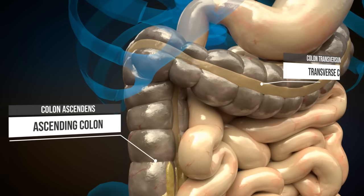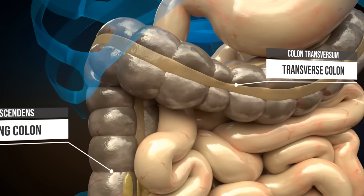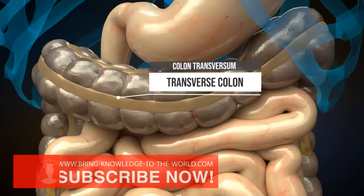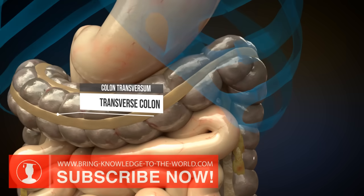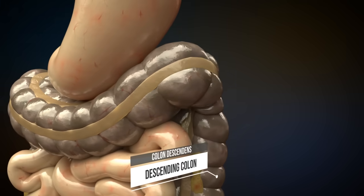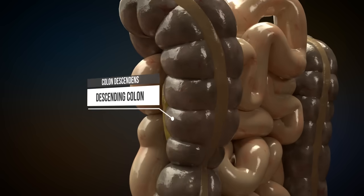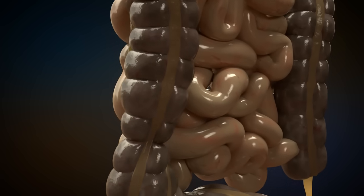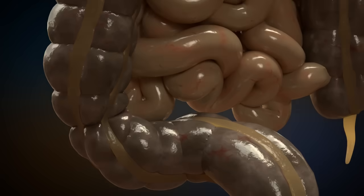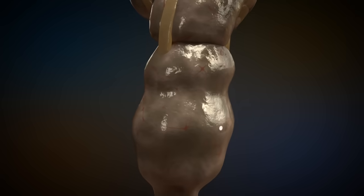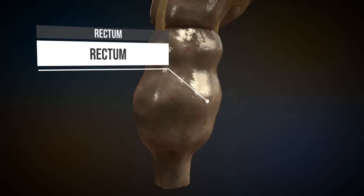Through peristalsis, the chyme is transported from the ascending colon to the transverse colon to the descending colon. On its way through the large intestine, water is removed from the chyme. Furthermore, mucus is added for proper excretion of waste substances. Substances that cannot be absorbed through the small intestine or the large intestine remain in the rectum and are finally excreted through the anus.